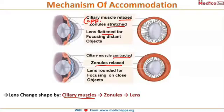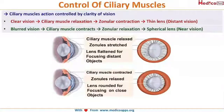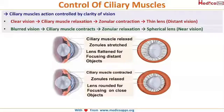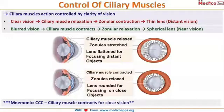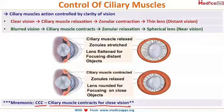To summarize: the ciliary muscle's action is controlled by the clarity of vision. When vision is clear, the ciliary muscle relaxes, zonules contract, and distant objects are seen. When vision is blurred, the ciliary muscle contracts, zonules relax, and the lens becomes more rounded for clear near vision. The mnemonic to remember is CCC — ciliary muscle contracts for close vision.